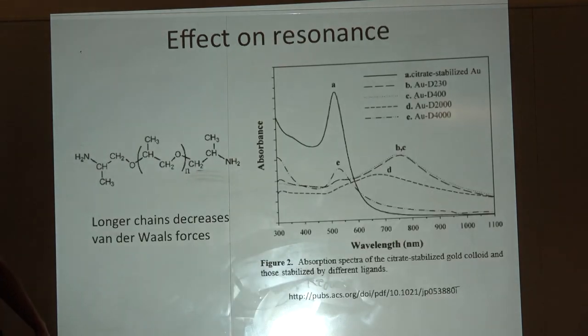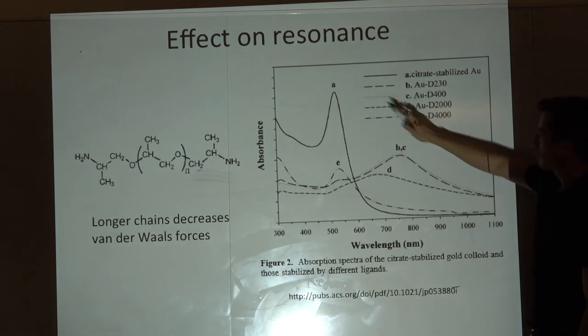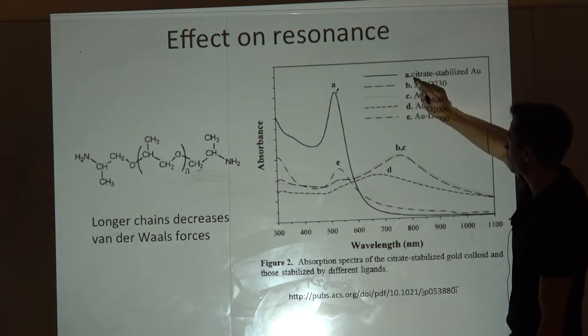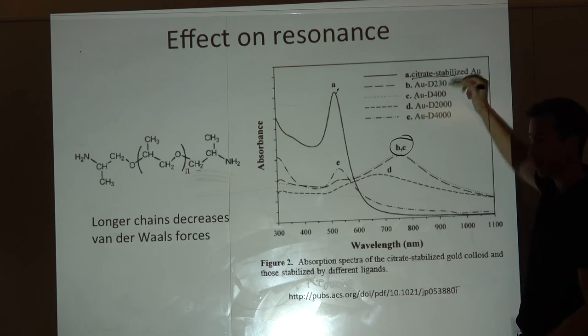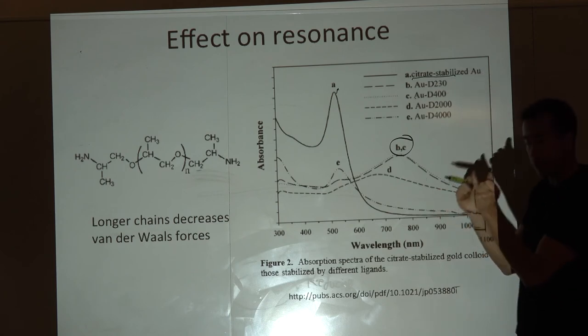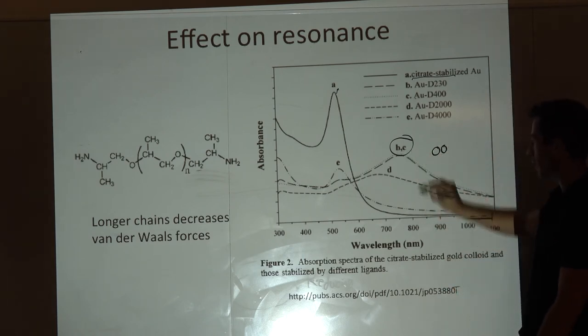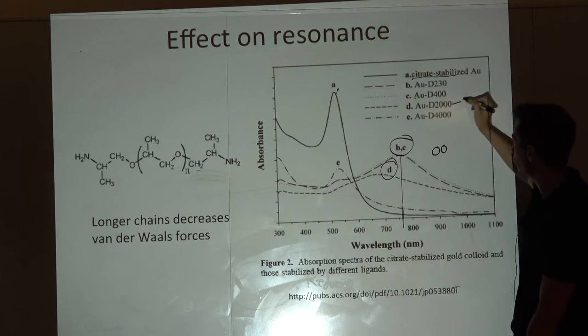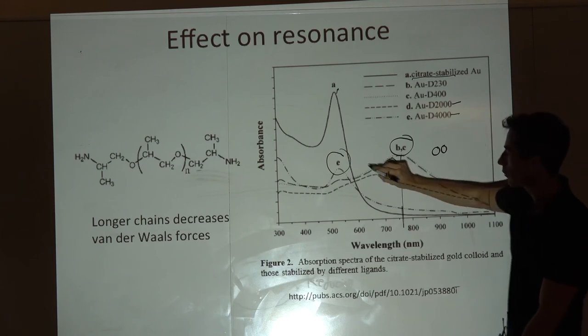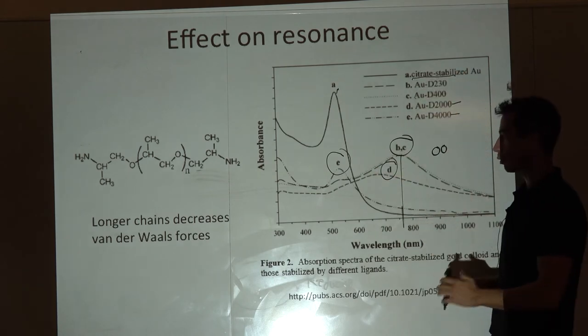So this is not entirely impressive, but the absorbance data really confirms this. A is citrate stabilized without polymer. B and C are 230 and 400, the smaller polymers. With smaller polymers, particles are closer together, act like a nanorod, and we're down at 750 nanometers. By D at 2000 molecular weight and E at 4000, it starts to blue shift again.